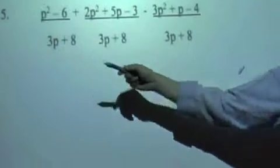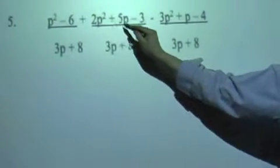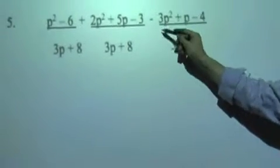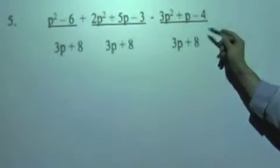Okay, p squared minus 6 over 3p plus 8 plus 2p squared plus 5p minus 3 over 3p plus 8 minus 3p squared plus p minus 4 over 3p plus 8.